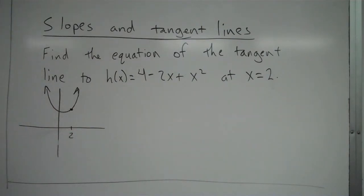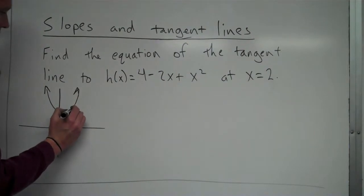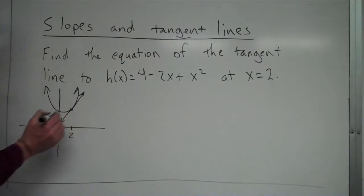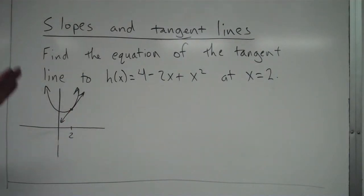Alright, the tangent line to the graph at x = 2 has the same slope as this graph at 2. The same slope, and it touches the graph at x = 2. Just touches it at that one point.